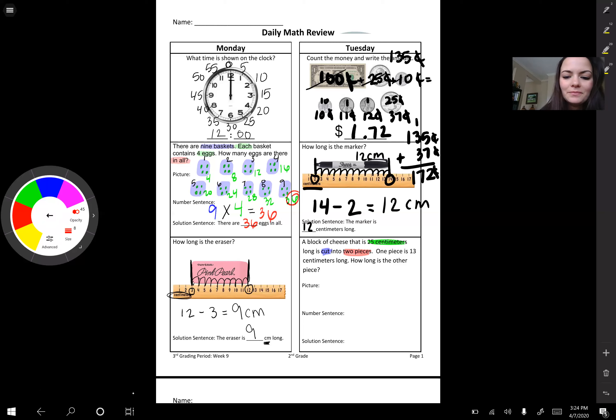One piece is 13 centimeters long. Sorry guys, one piece is 13. Okay. And then how long is the other piece? So we're looking for the other piece.